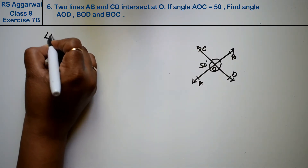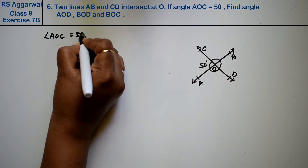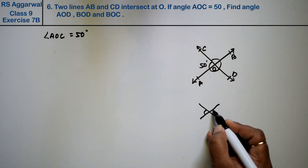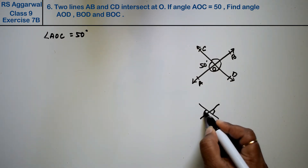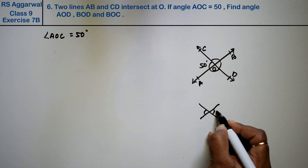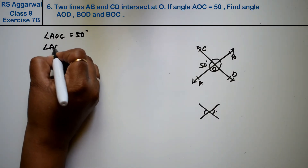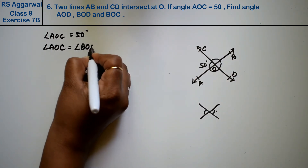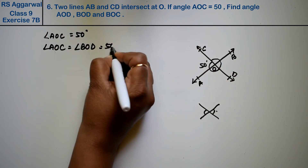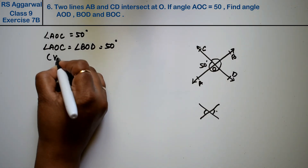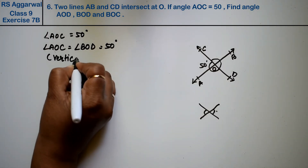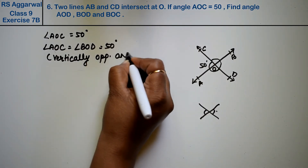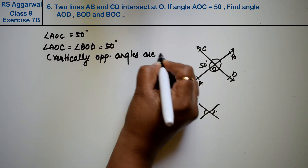We are given that angle AOC equals 50 degrees. Now, when there are intersecting lines, the opposite angles are equal. So what is angle AOC equal to? It equals angle BOD. So angle BOD is equal to 50 degrees. Why? Because vertically opposite angles are equal.